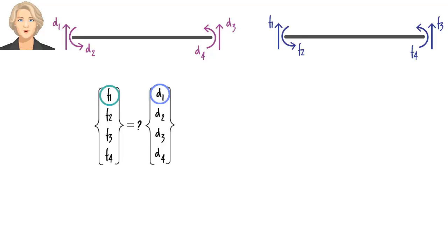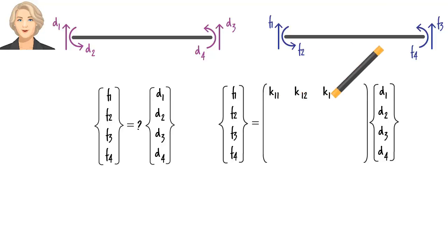We can pair F1 with D1, F1 with D2, F1 with D3, and so on. Therefore, we need 16 stiffness coefficients. Writing the coefficients in matrix form, we get this 4x4 matrix, which we call member stiffness matrix.